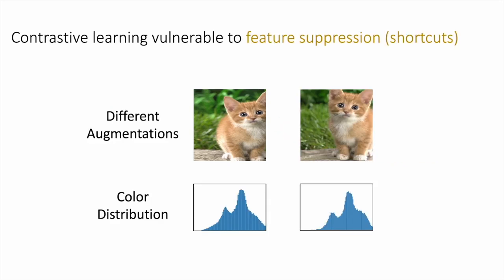Unfortunately, contrastive learning is vulnerable to feature suppression, which makes the network learn useless information. For example, the color distribution of the two augmented views is typically very similar. As opposed to the semantic information, contrastive learning uses color distribution and it does not need to learn the semantic information, and that will degrade the performance.